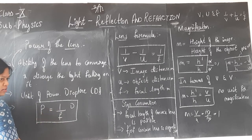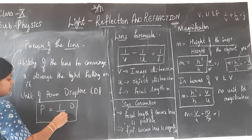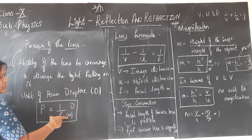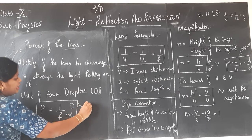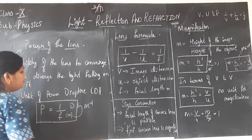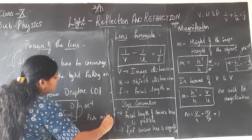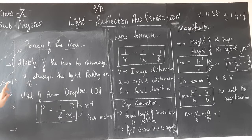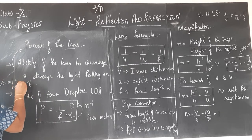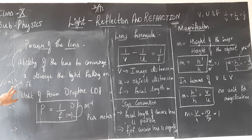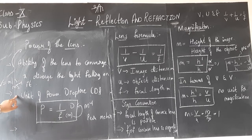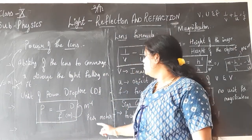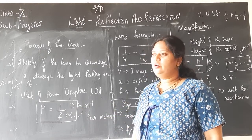Since power P = 1/F and focal length is measured in meters, the unit of power is 1/meter, which is m⁻¹ (per meter). This special unit — m⁻¹ — is given the name diopter (D). So one diopter equals one per meter.